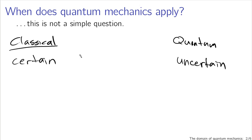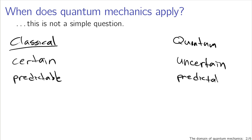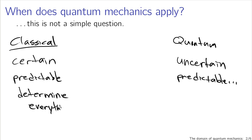In the classical side things are predictable. They may be chaotic and difficult to predict, but in principle they can be predicted. On the quantum side things are predictable too, but with a caveat. On the classical side every property of the system can be known with perfect precision, whereas in quantum mechanics what you predict are probabilities, and learning to work with probabilities is going to be the first step to getting comfortable with quantum mechanics.